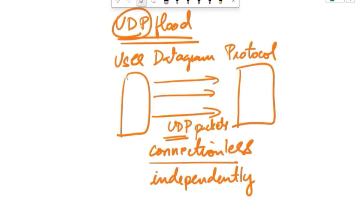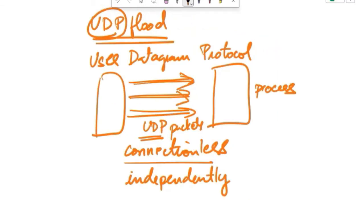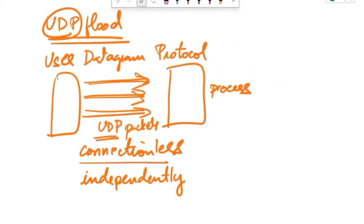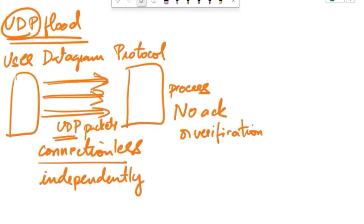When the target receives these UDP packets, it tries to process them. But unlike TCP, UDP does not require acknowledgement or verification of receipt. This means the server does not check if the packets are coming from a legitimate source or if they are part of a valid communication session.